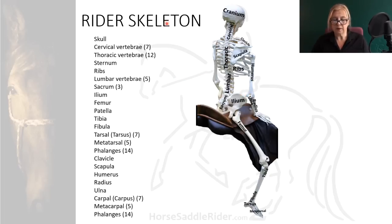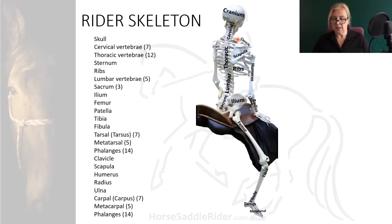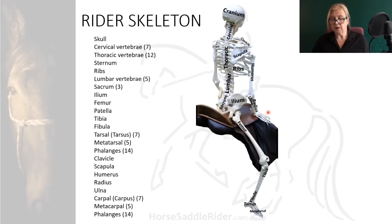Cranium, skull, cervical, thoracic and lumbar vertebrae and the sacrum, clavicle with the sternum at the front of the skeleton, scapula, ribs, humerus, radius, ulna, carpal bones, metacarpals and phalanges or fingers.